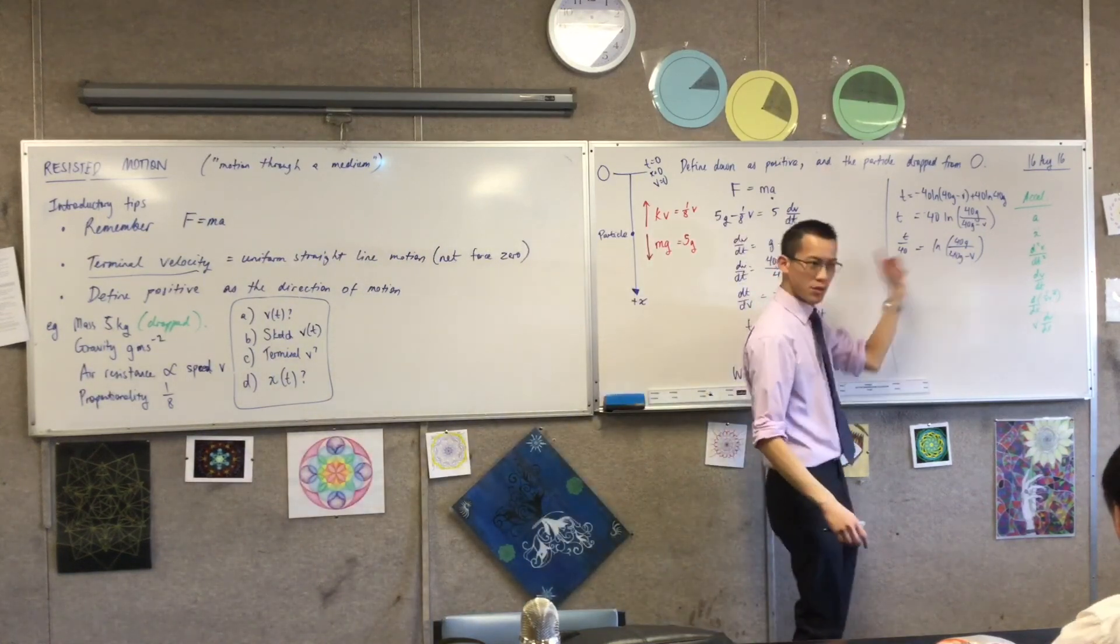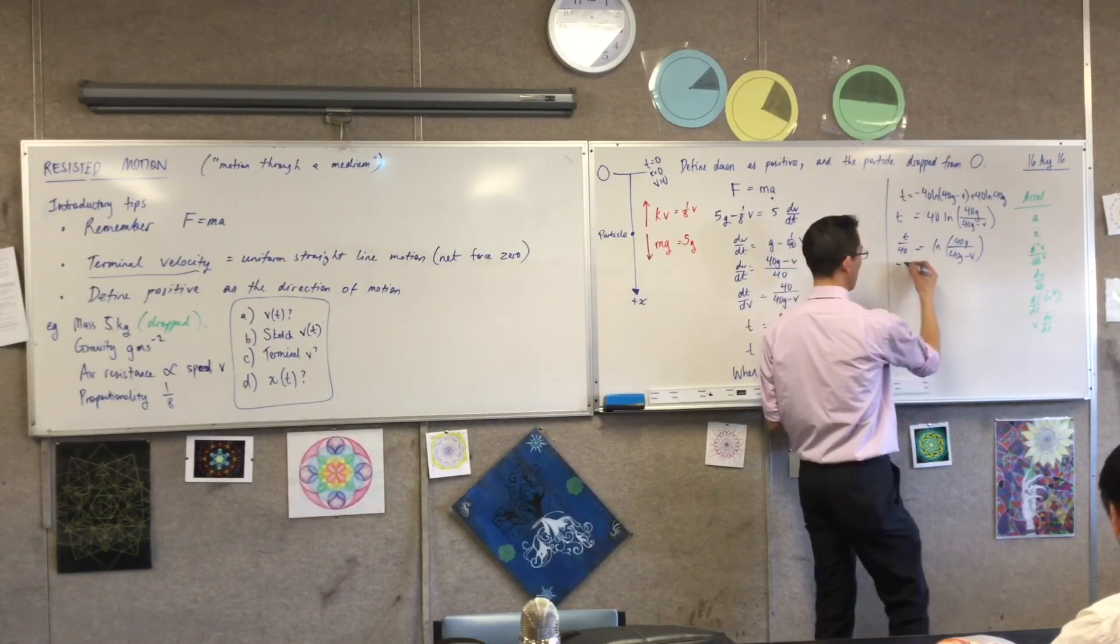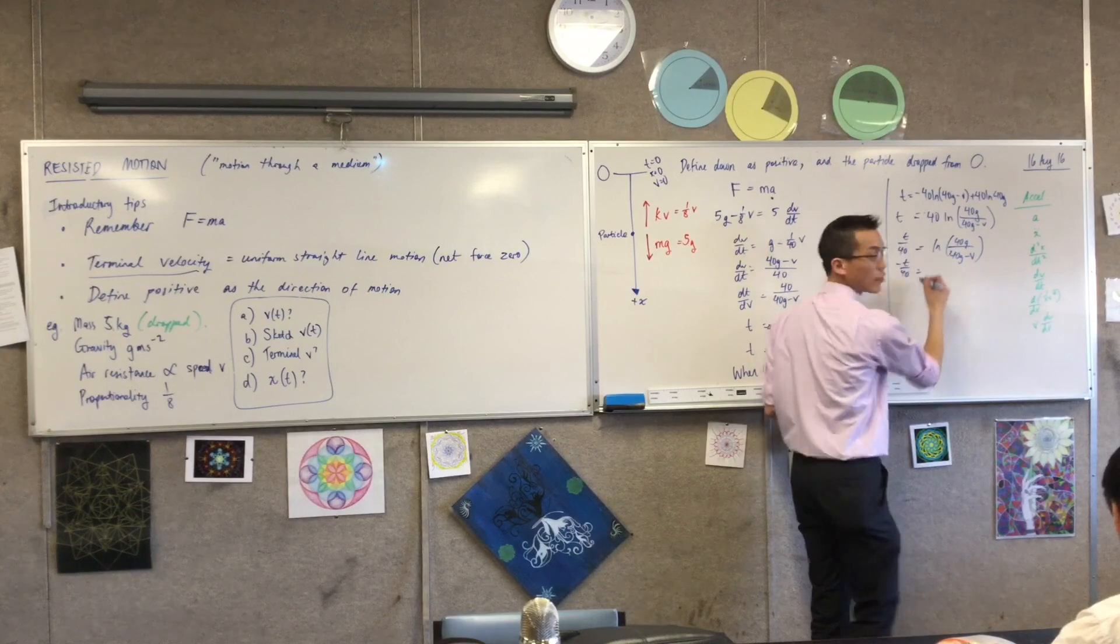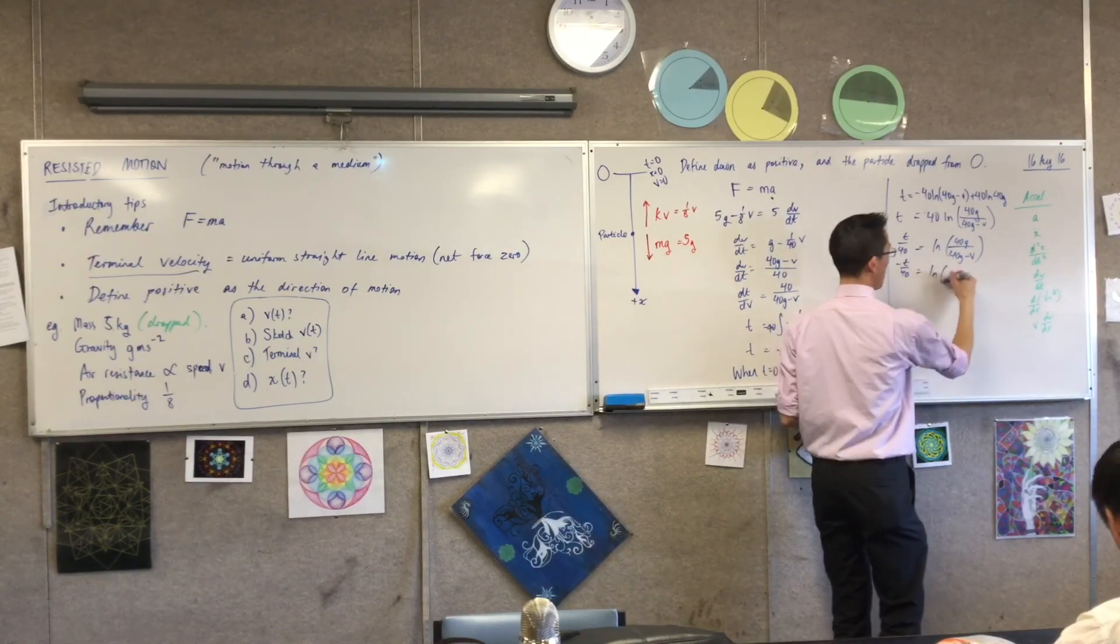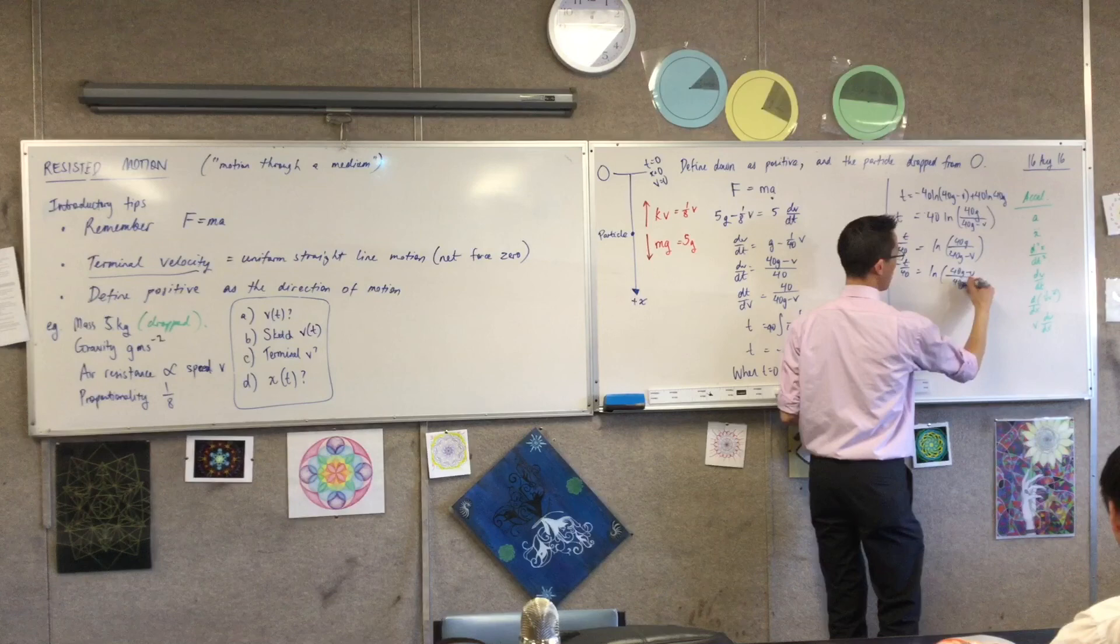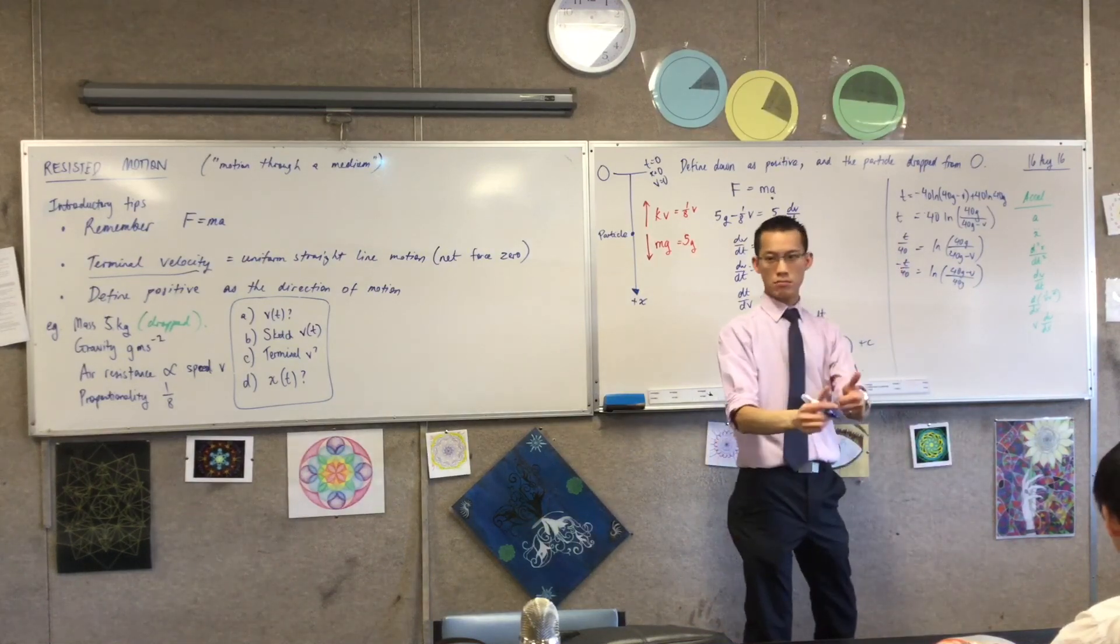So if I multiply both sides by negative 1, that's going to become this over here, and over here, these guys flip because it's to the power of negative 1. So far, so good? Yep.